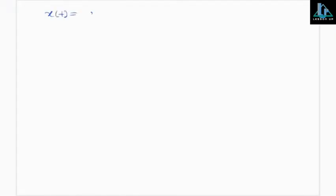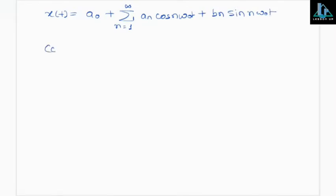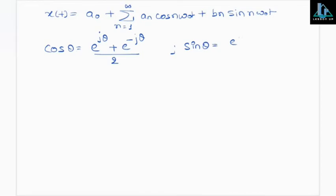Now, x(t) in trigonometric Fourier series is written as: a₀ plus summation from n=1 to infinity of [aₙcos(nω₀t) + bₙsin(nω₀t)]. Now, cosθ can be written exponentially as (e^(jθ) + e^(-jθ))/2, and sinθ as (e^(jθ) - e^(-jθ))/2.